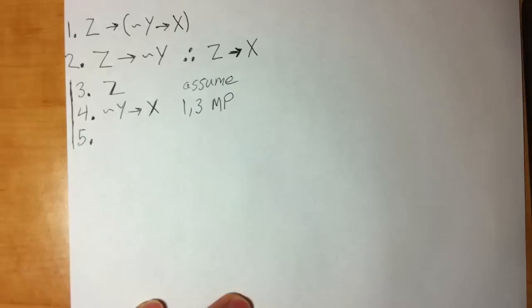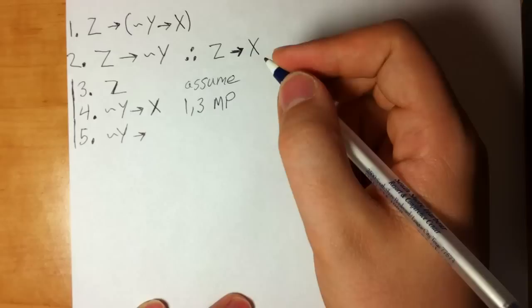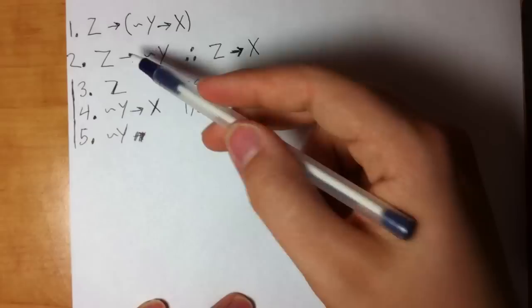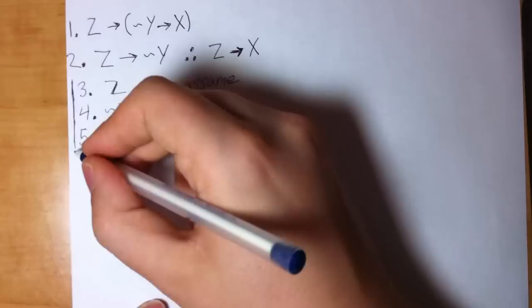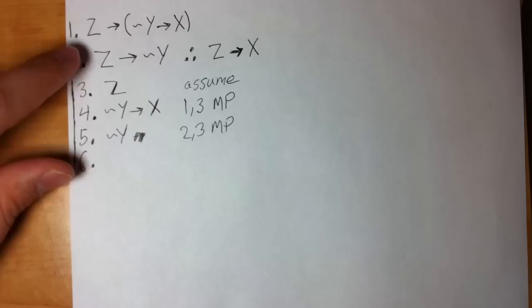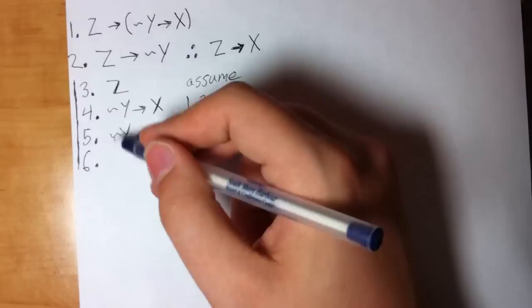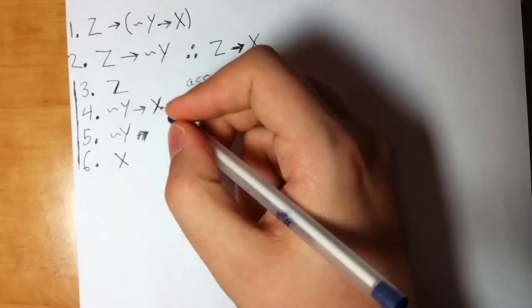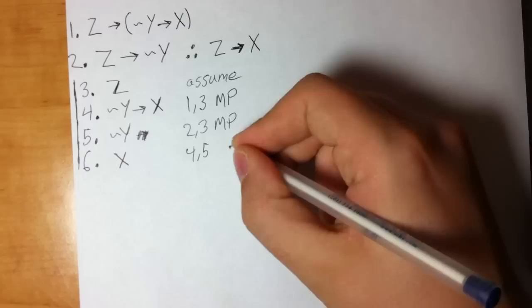That's lines one and three, MP. What else can I do? There's a match on line two and three — I can get tilde Y from lines two and three. And then there's a match with lines four and five: I have the left side of line four right there on line five, which lets me get X. So that's four and five MP.